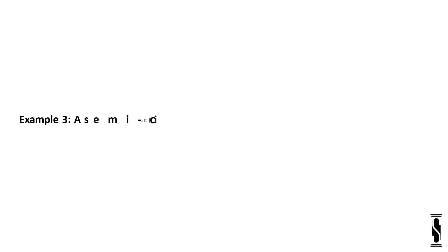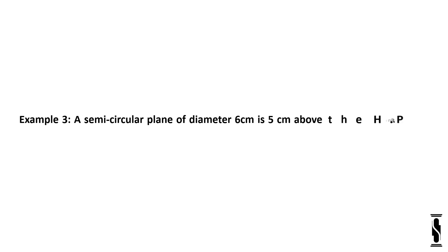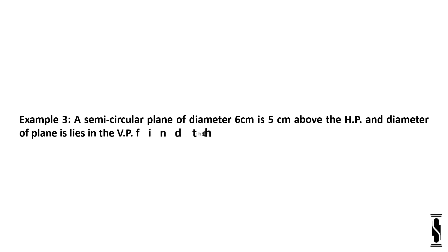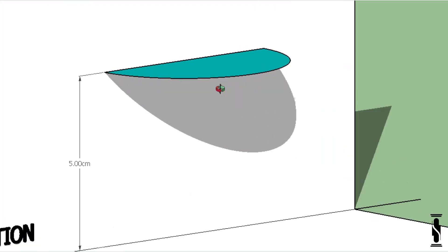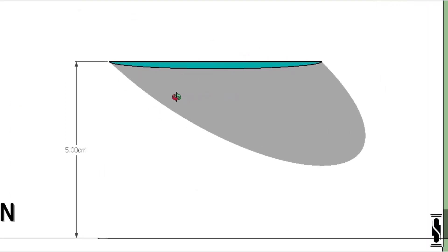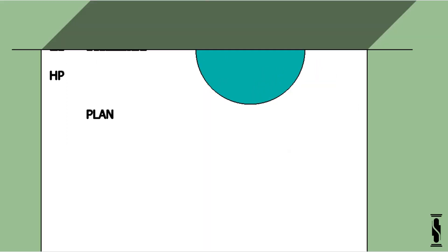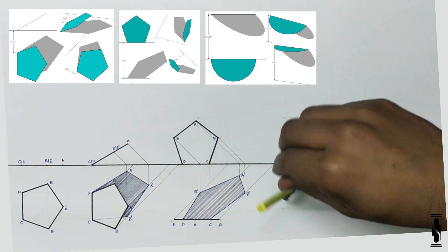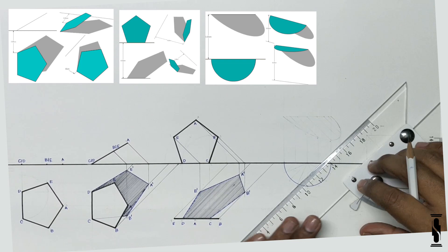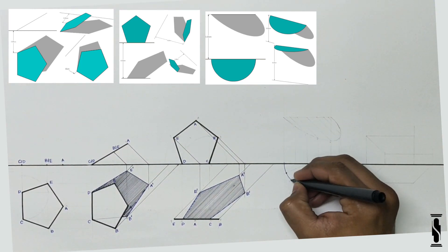A semi-circular plane of diameter 6 cm is 5 cm above the HP and the diameter of the plane lies in the VP. Find the shadow profile of the semi-circular plane. First, take a look at the 3D representation. We can see that the shadow profile is curvilinear in nature and starts from the straight line of the semi-circle. Now complete the basic orthographic projection and divide the curve into 8 equal parts.